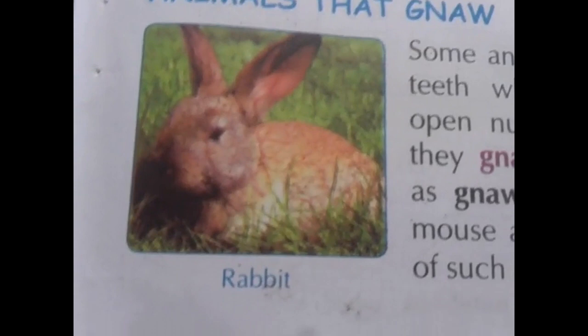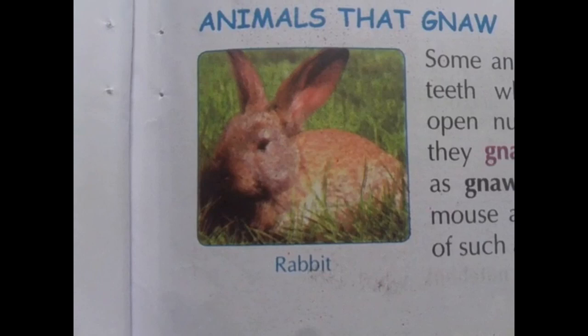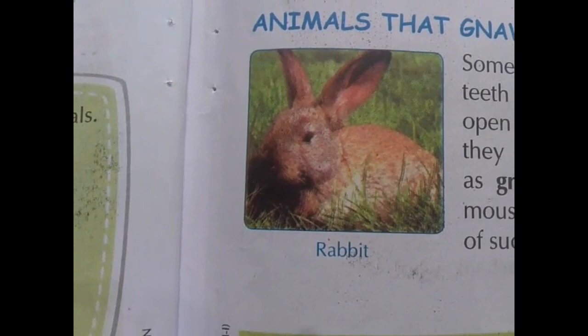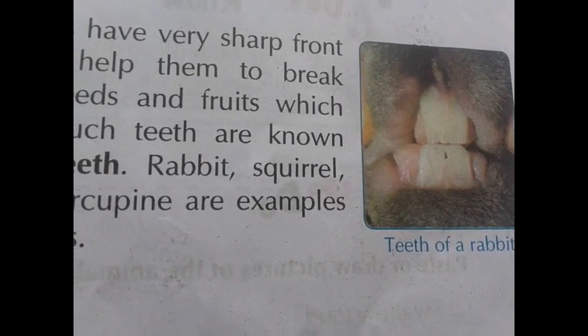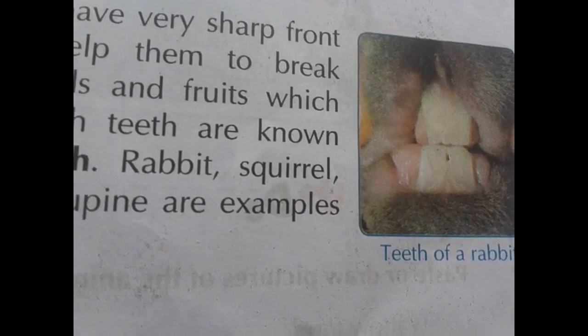Some animals have sharp front teeth which help them to cut nuts, seeds, and fruits, which they gnaw. Such teeth are called gnawing teeth. Examples are rabbit, squirrel, and other such animals. With the help of these teeth, they cut the nuts and eat the food inside.